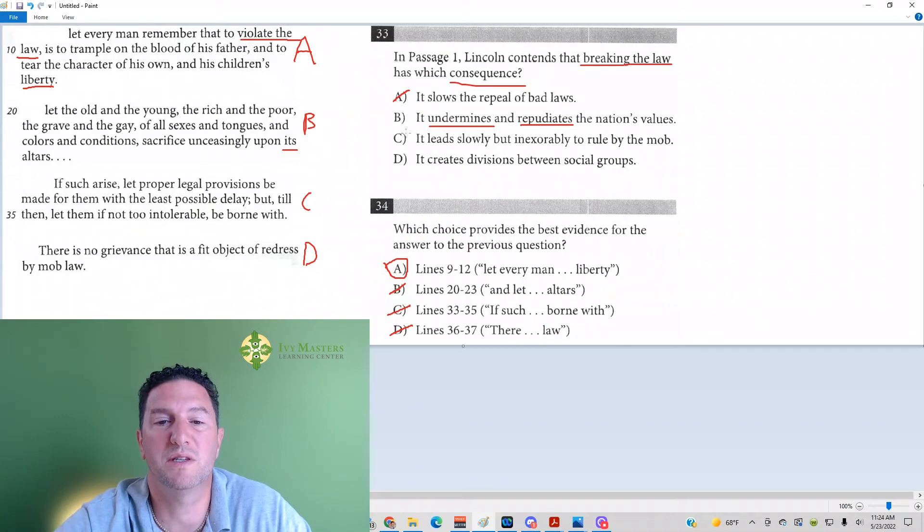But look at answer choice C. It leads slowly and inexorably to rule by mob. Now notice answer choice C seems to match here, seems to match answer choice D for number 34. They're both talking about a mob. But he is not saying breaking the law leads to a mob. He's just talking about grievances in general. Like typically it's a grievance against the law or a grievance against another or something like that.